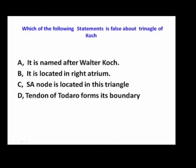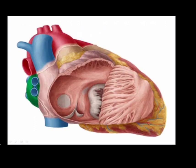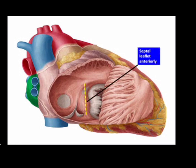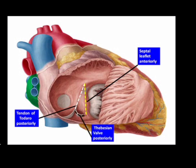Which of the following statements is false about the triangle of Koch? It is named after Walter Koch — true. It is located in the right atrium — true. The SA node is located in this triangle — wrong. The tendon of Todaro forms its boundary — true. The triangle of Koch in the right atrium was described by Walter Koch. It is bounded anteriorly by the septal leaflet, and posteriorly by the tendon of Todaro and the Eustachian valve. This triangle is important in electrophysiology because it contains the AV node, not the SA node, which is located in relation to the superior vena cava and crista terminalis.